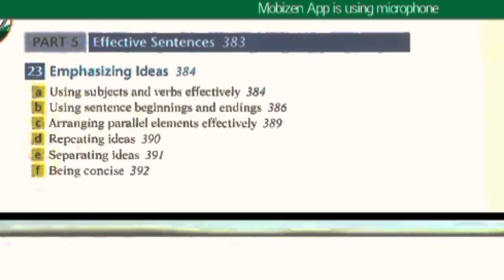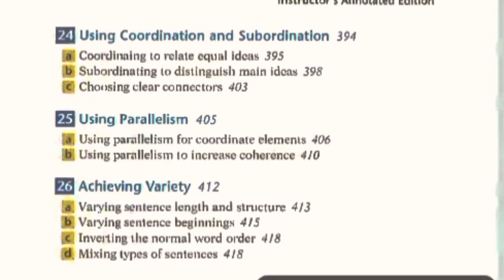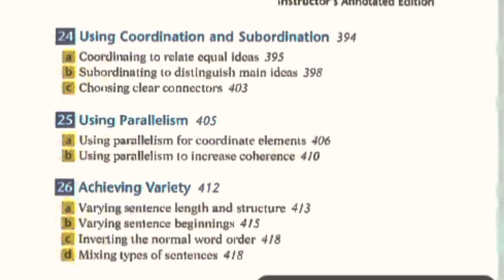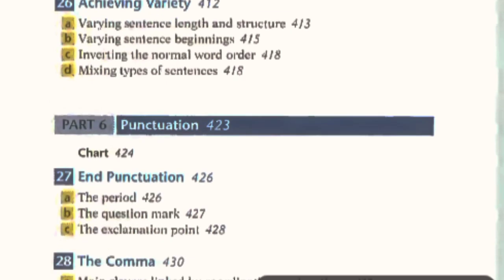Part five covers effective sentences: emphasizing ideas, all the points A, B, C, D, E, F, using coordination and subordination, using parallelism, and achieving variety in your writing.